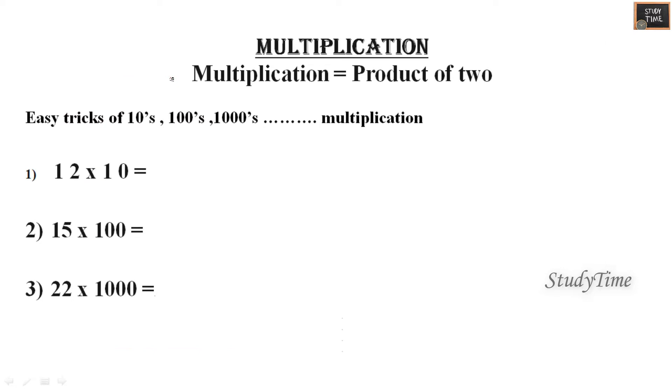Next, easy tricks of tens, hundreds and thousands. If you want to multiply with ten, hundred or thousand, you have to write the number and add zero with it. So 15 into 100 is 1500, 22 into 1000 is 22,000.